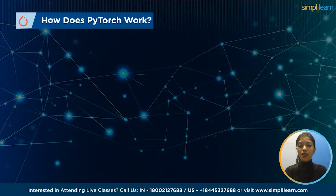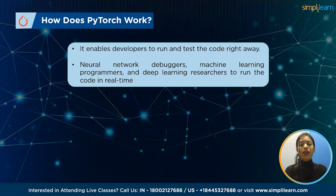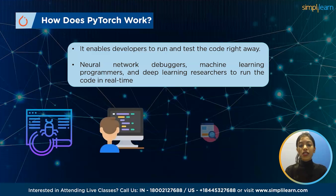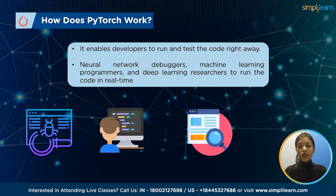How does PyTorch work? To write readable code, PyTorch adheres to Python's distinct and unique coding features. It allows developers to run and test relevant portions of code immediately rather than waiting for the entire program to finish. Furthermore, it eliminates the need for neural network debuggers, machine learning programmers, and deep learning researchers to run code in real time without having to wait to see if it works or not.